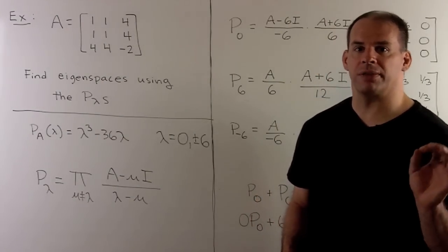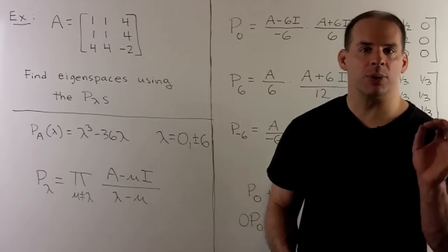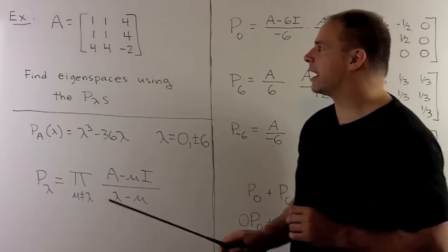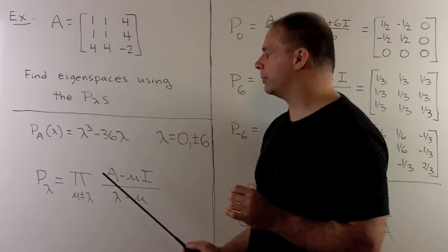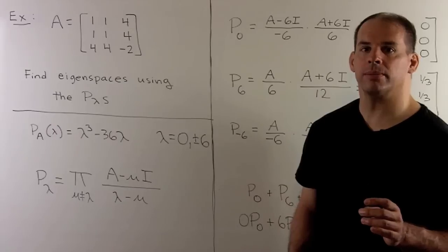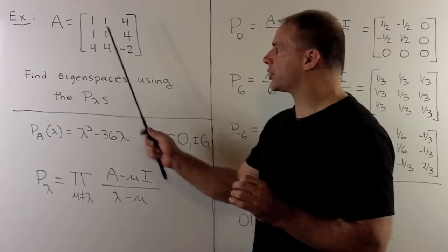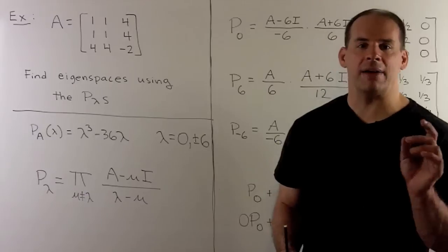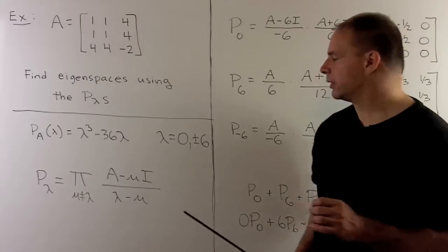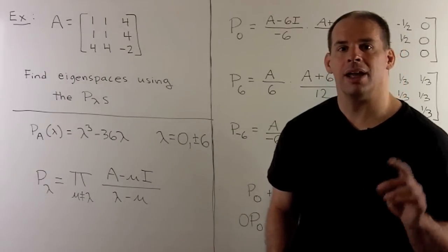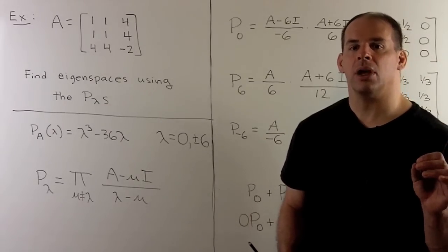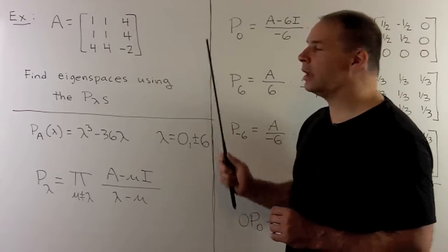Using our formula, let's find the projections for the following matrix A. Once we have those, we can find the eigenspaces for each eigenvalue. The characteristic polynomial of A is lambda cubed minus 36 lambda, so our eigenvalues are 0 and plus or minus 6. We can verify two of these: because the first two rows are the same, there are non-zero vectors in the null space, giving eigenvectors for eigenvalue zero. Also, the sum of each row equals six, so we have an eigenvalue of six, verified by the eigenvector (1, 1, 1).